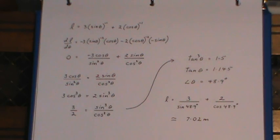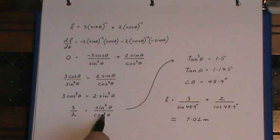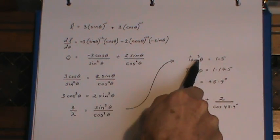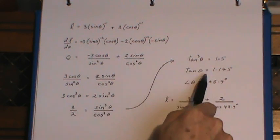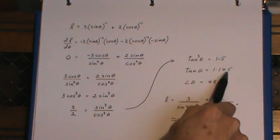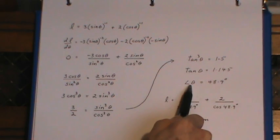Now fortunately these are both cubed, so I can replace sine cubed over cos cubed with tan cubed. Took the cube root, got tan theta, then took the inverse of tan theta, got my angle.